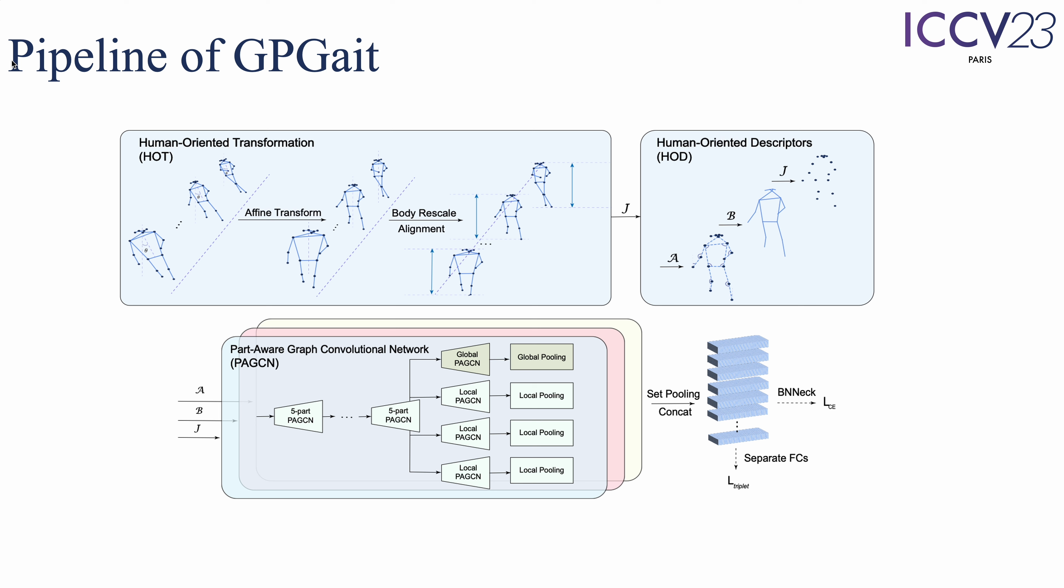Finally, a widely used BN-NET is adopted to adjust feature space. Triplet loss and cross-entropy loss are utilized to supervise the whole training process.